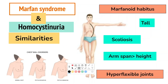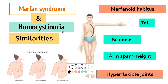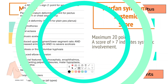Homocystinuria and Marfan syndrome overlap in some clinical symptoms, primarily in marfanoid habitus. Both conditions are associated with scoliosis, posterior vertebral body scalloping, chest abnormality, arm span greater than height, and marfanoid habitus. Hyperflexible joints are uniformly present in patients of Marfan syndrome, while in patients of homocystinuria they are variably present.